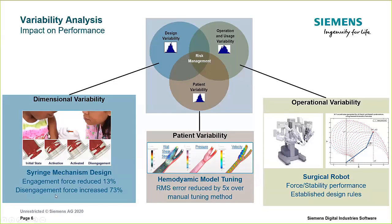Then there is patient variability. When simulating an implanted device like a catheter, heart valve, or stent, you must account for downstream hemodynamics in the simulation model. Simulation can tune parameters for inertia and resistance to blood flow — accounting for downstream organs and blood vessel bifurcations — mathematically against experiments to ensure correct boundary conditions. In the case we'll discuss, computational fluid dynamics simulation assesses device performance across a range of individual anatomies, just as you would in a clinical trial.